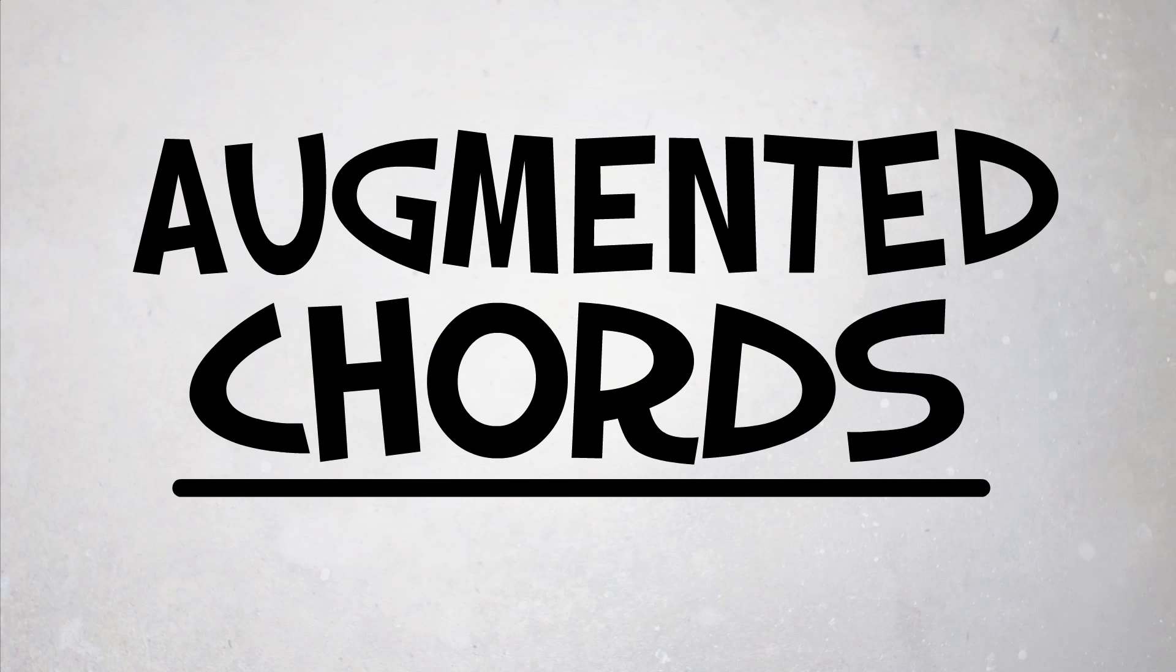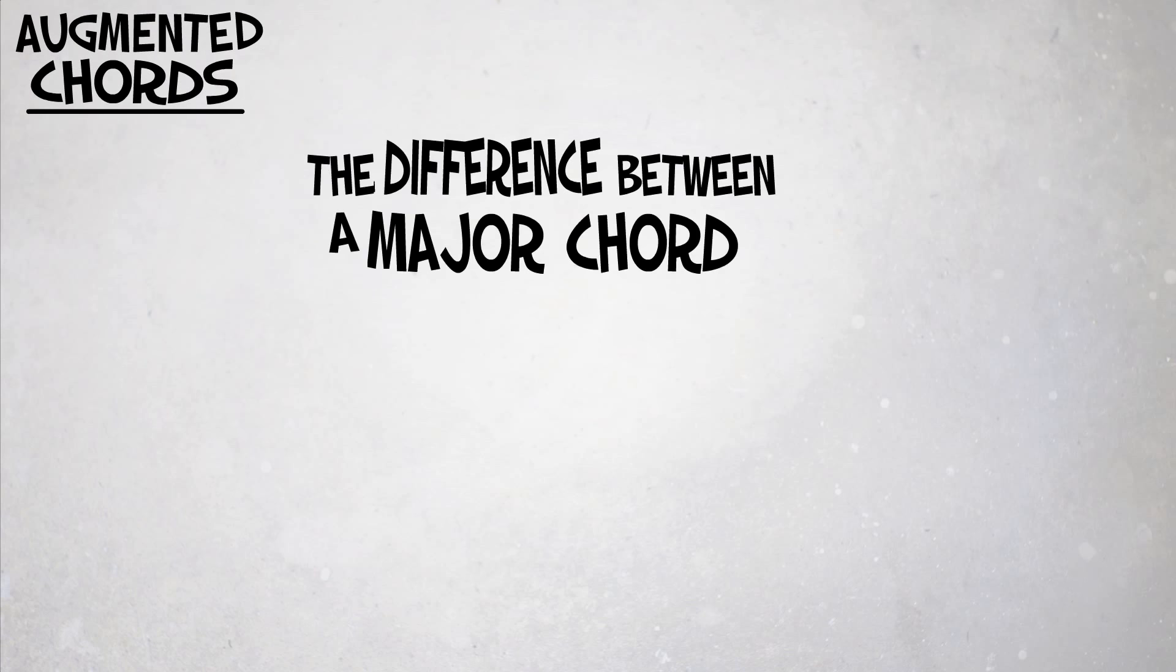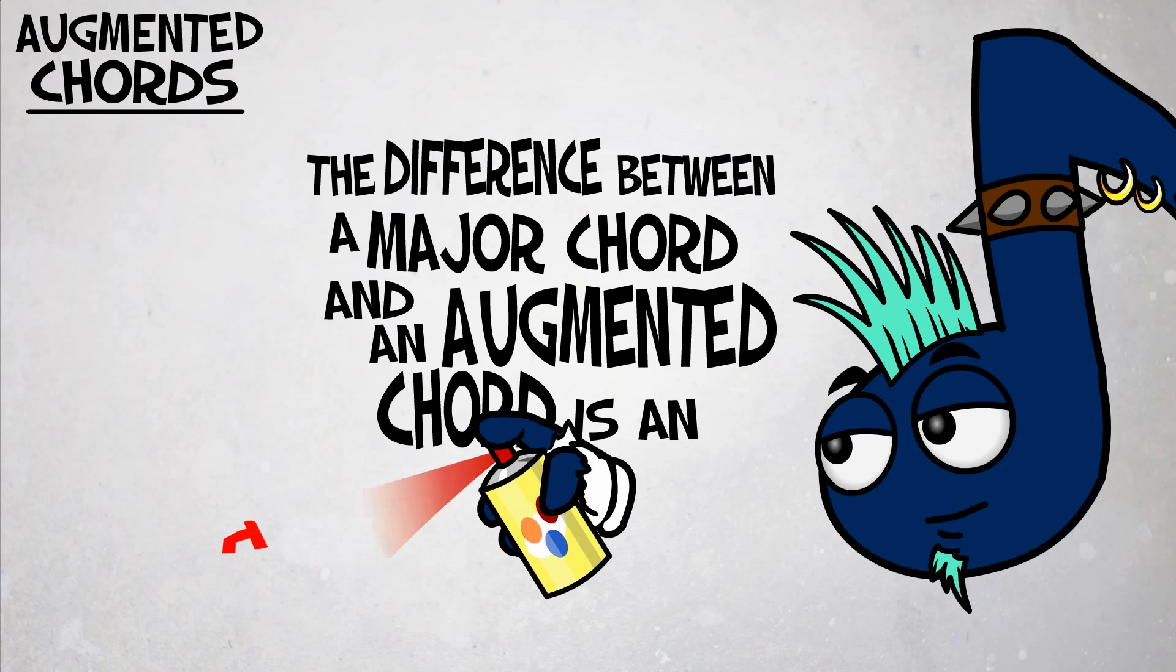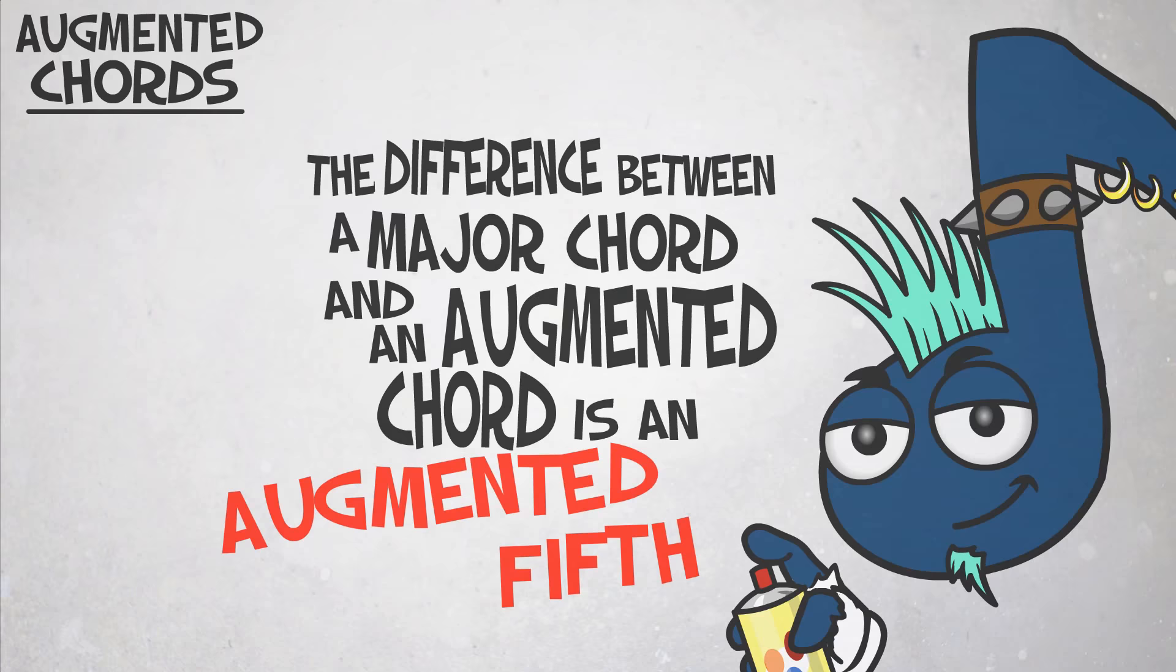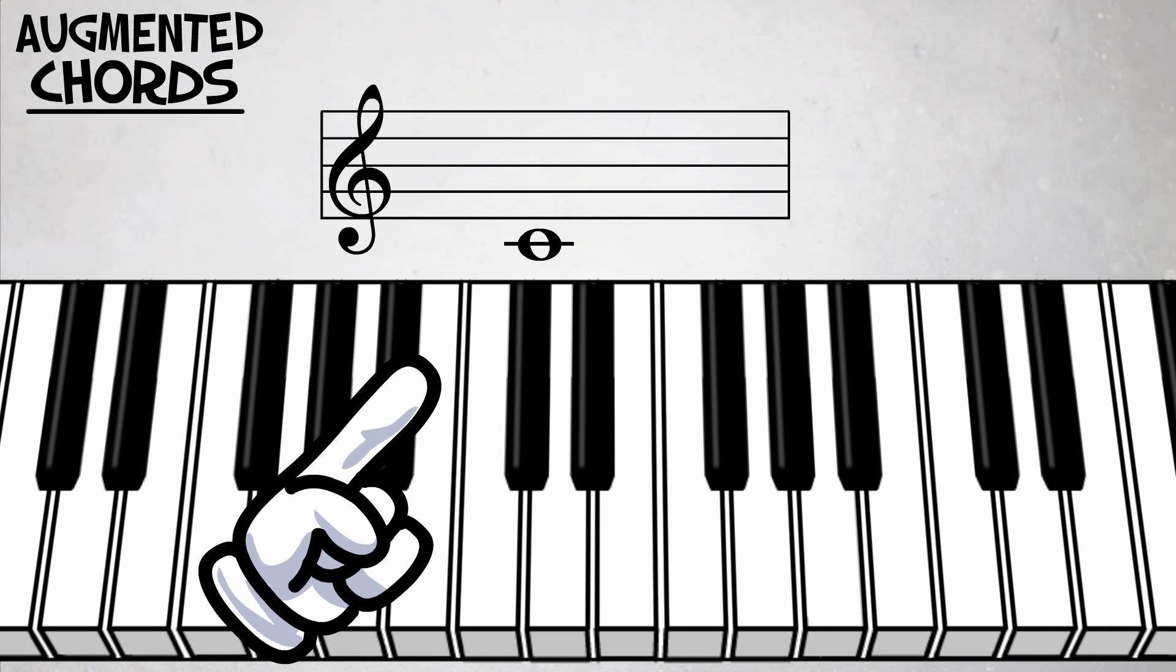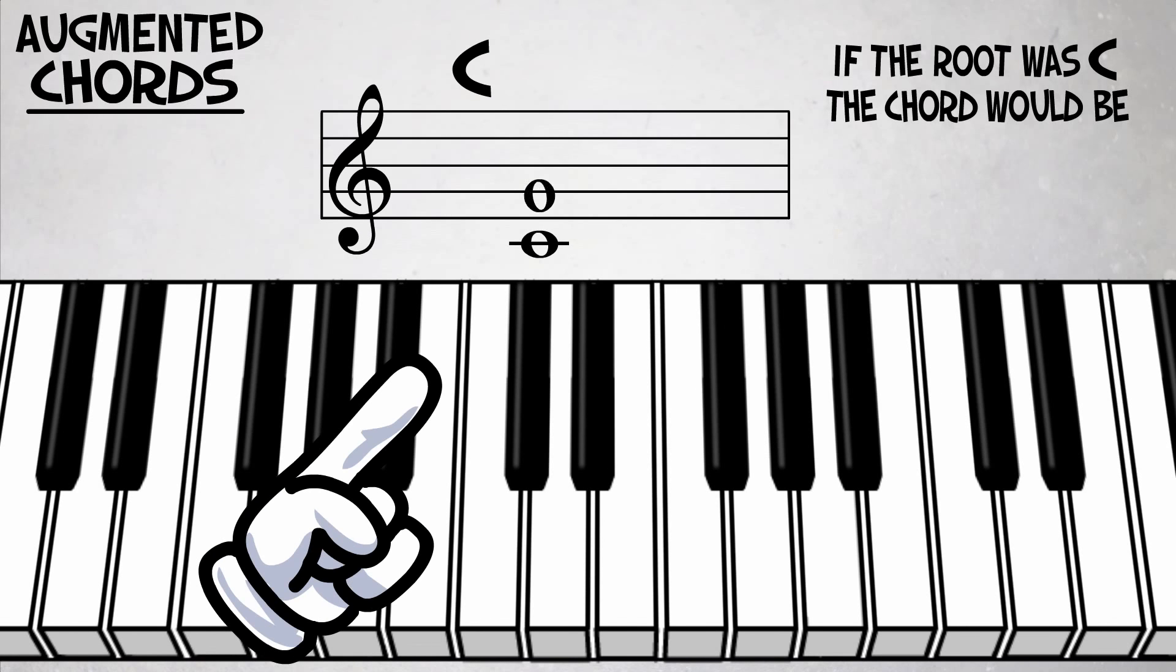Augmented chords. The difference between a major chord and an augmented chord. For example, if the root was C, the chord would be C, E, G sharp.